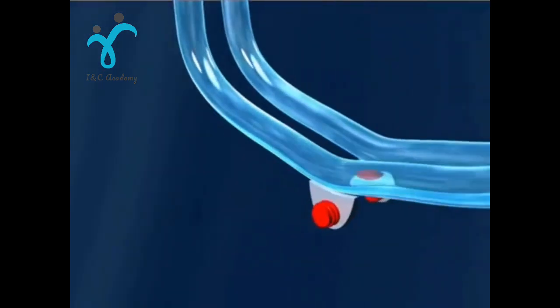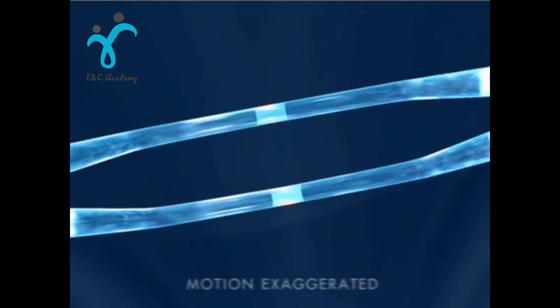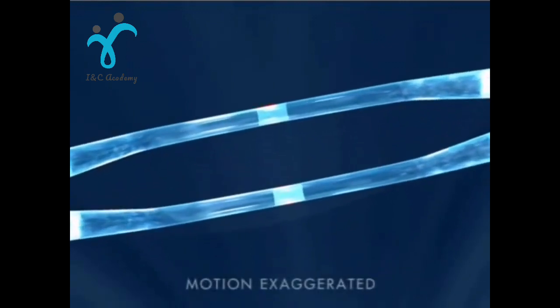This is achieved by exciting the measuring tubes with an electromagnetic exciter at its first resonance frequency. When no mass is flowing, the two tubes oscillate symmetrically.